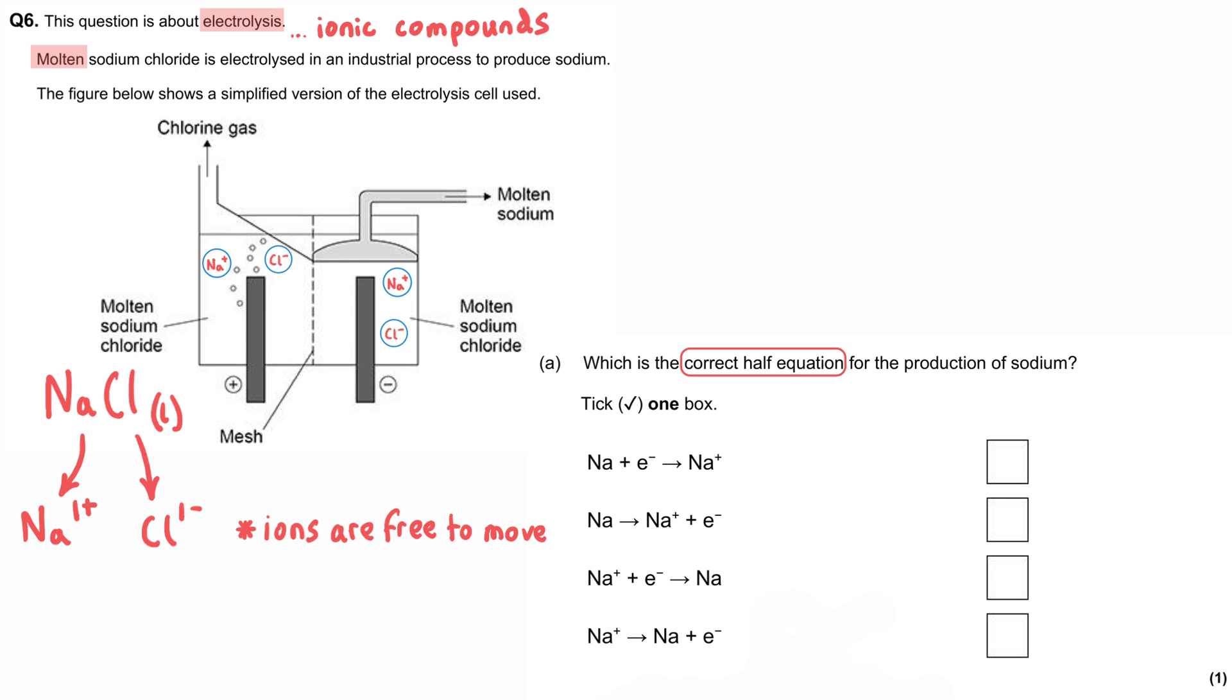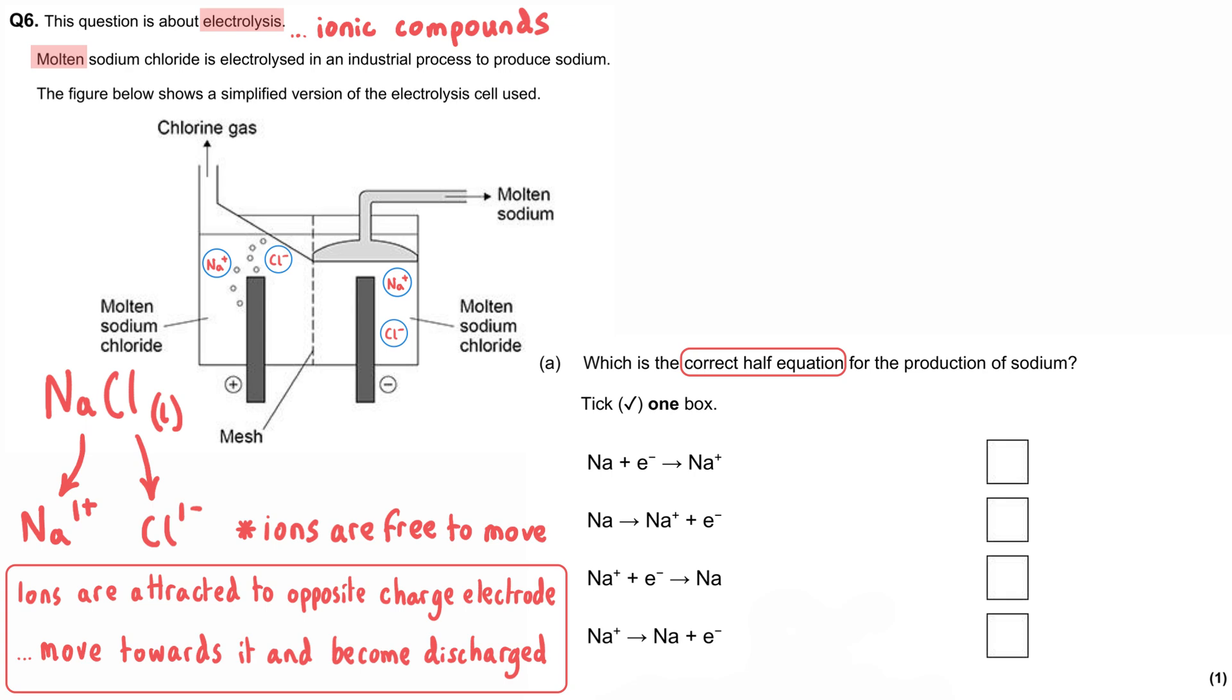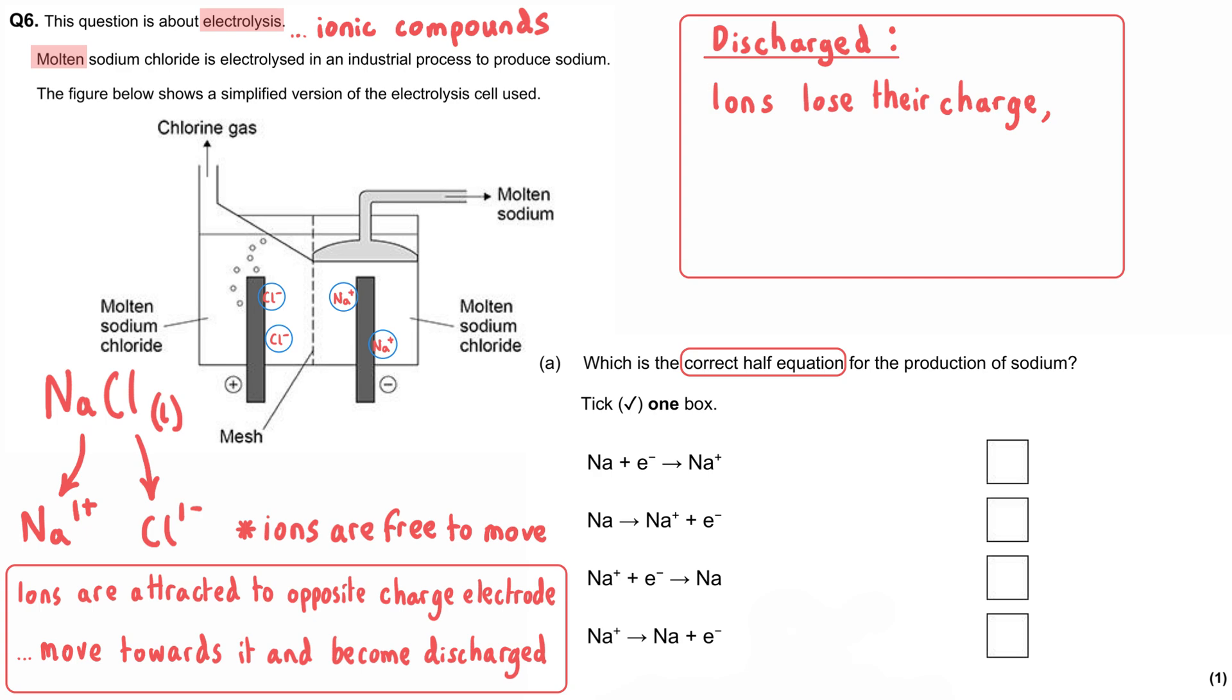Before we answer this question, we need to remind ourselves that during electrolysis, the ions are attracted to the oppositely charged electrode, move towards it and become discharged. By discharged, we mean the ions lose their charge, typically turning into elements. How they do this depends on the charge of the ion. If they are a negative ion, they will lose electrons and become oxidized. If they are positive ions, they will gain electrons and be reduced.